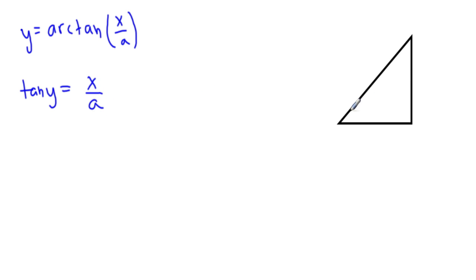And this will be our angle, this is y, which means that x is our opposite side and a is our adjacent. Since this is a right triangle, this side will be the square root of a squared plus x squared.